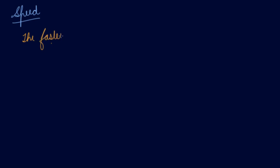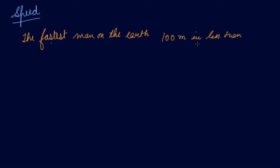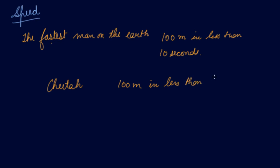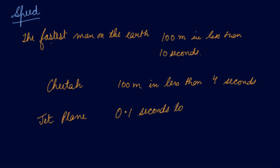If I talk about the fastest man on earth, he or she can run about 100 meters in less than 10 seconds. If I talk about a cheetah, it can cover 100 meters in less than 4 seconds. And if I talk about a jet plane, it will take only 0.1 seconds to cover 100 meters.